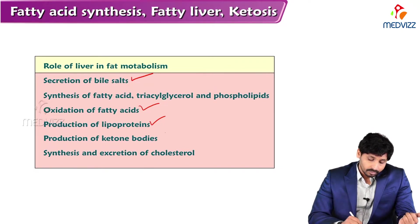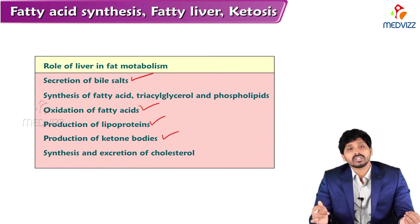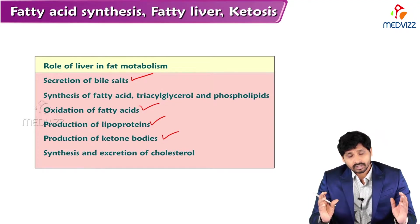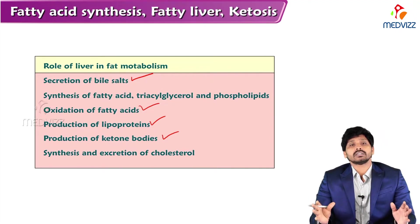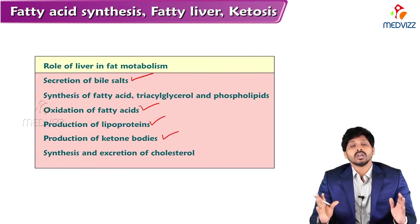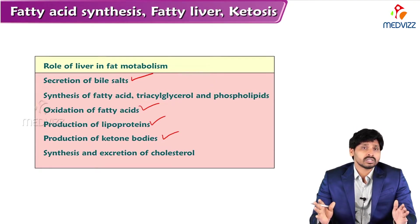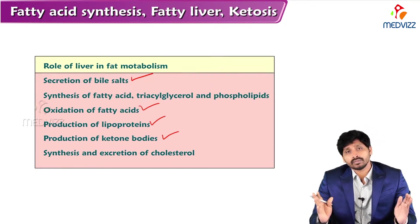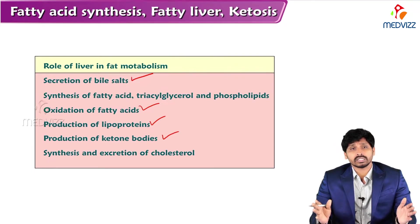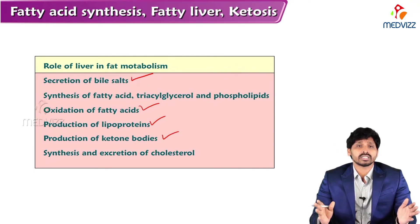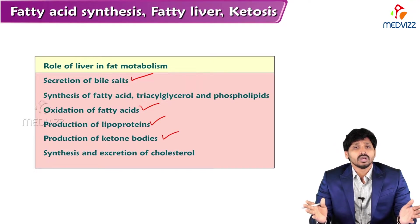And for production of ketone bodies — they are emergency fuel to the brain, exclusively synthesized in the liver. They will be transported to the brain in case of emergency, such as in prolonged fasting conditions and diseases like uncontrolled diabetes.